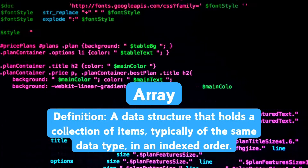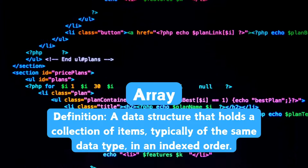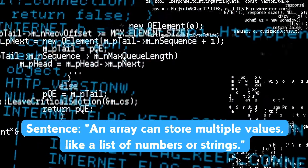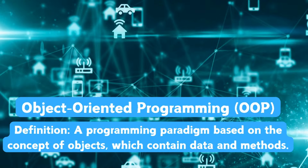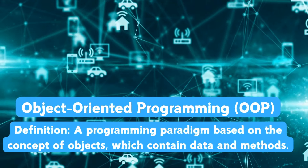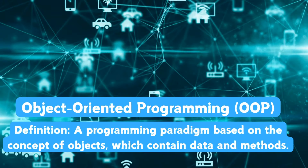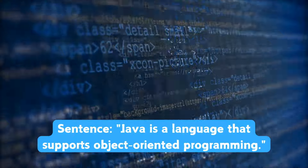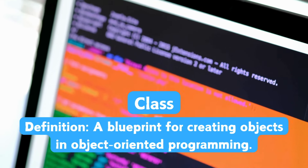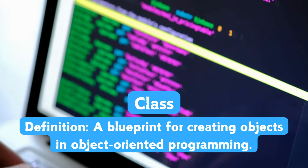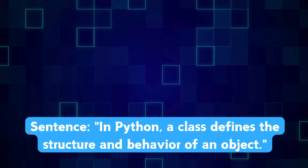Array. An array is a data structure that holds a collection of items, typically of the same data type, in an indexed order. An array can store multiple values, like a list of numbers or strings. Object-Oriented Programming, or OOP, is a programming paradigm based on the concept of objects, which contain data and methods. In Python, a class defines the structure and behavior of an object.